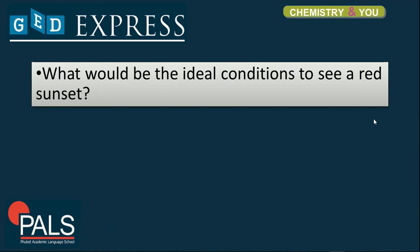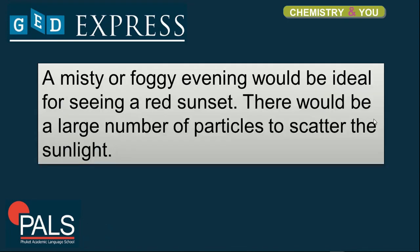What would be the ideal condition to see a red sunset? The answer is: a misty or foggy evening would be ideal for seeing a red sunset because there would be a large number of particles that scatter the sunlight.